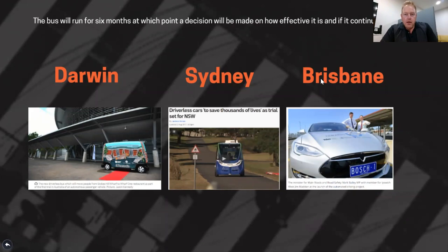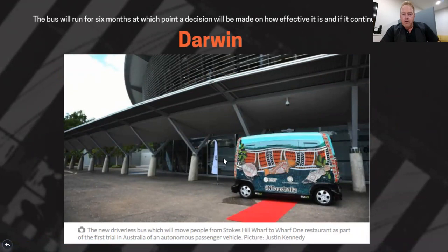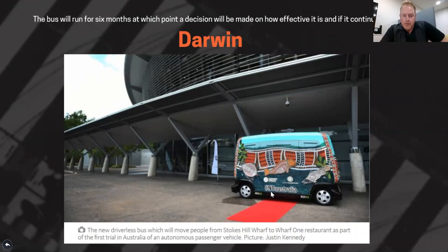I'll go through three examples of driverless cars in Australia — Darwin, Sydney, and Brisbane. In Darwin, my colleague Colin was just telling me that there is a driverless car in the city travelling around one of the more popular tourist spots. It looks a little bit like an ice cream van, and it's been here for the last six months in a very limited capacity — moving people a very short distance from one to the other. It was the first trial of a driverless car in Australia.